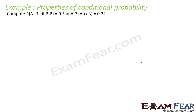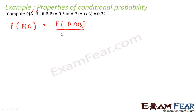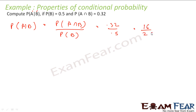Let us take a more simple example. We have to find probability of A given B. Probability of B is given, probability of A intersection B is given — same thing, we will just apply the formula. Probability of A given B is nothing but probability of A intersection B divided by probability of B. That is 0.32 divided by 0.5, and that is nothing but 16 by 25. Very simple.